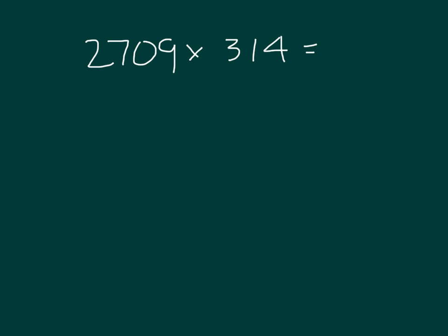Here I have another problem, 2,709 times 314. One of the things that might be helpful is to go ahead and estimate the product. It's close to 3,000. If we were to round 2,709 times 300, place two 0's because we're working with 300, place three more 0's, 3 times 3 is 9, my answer should be somewhere close to 900,000.